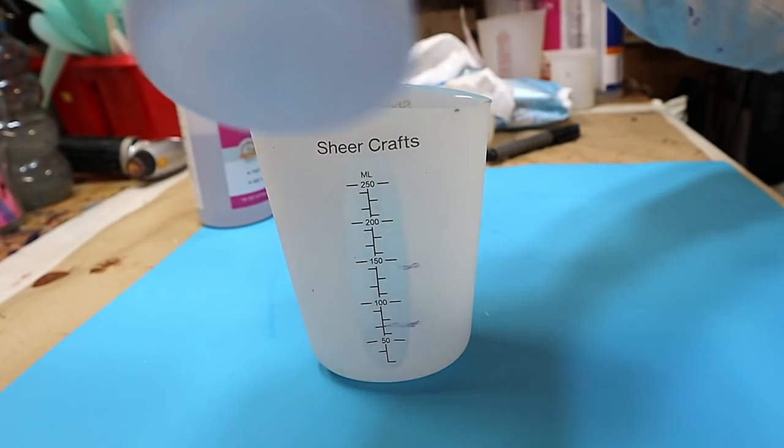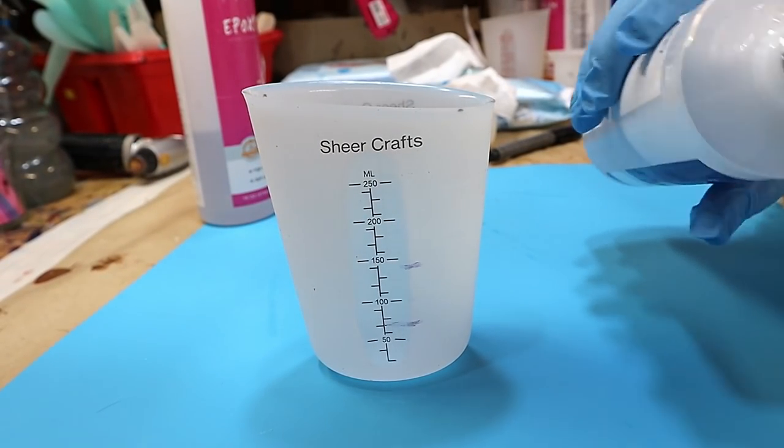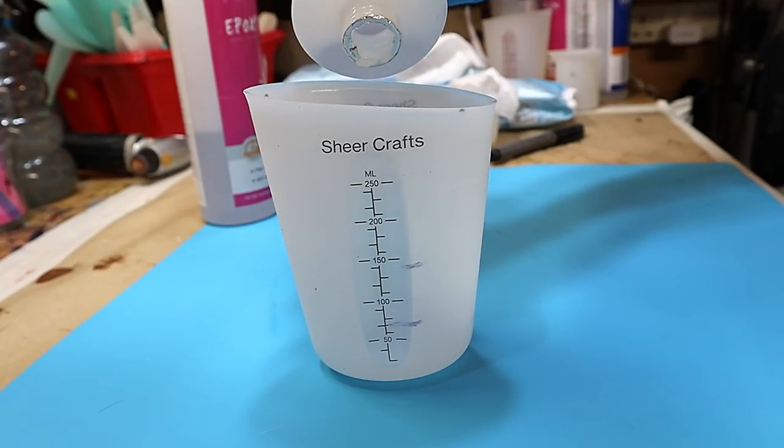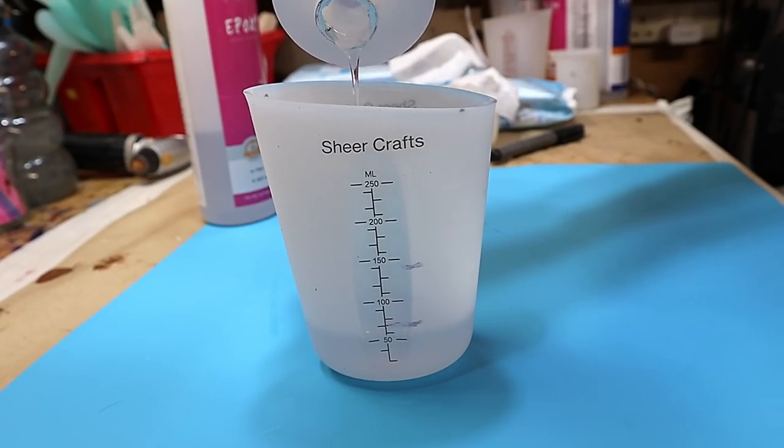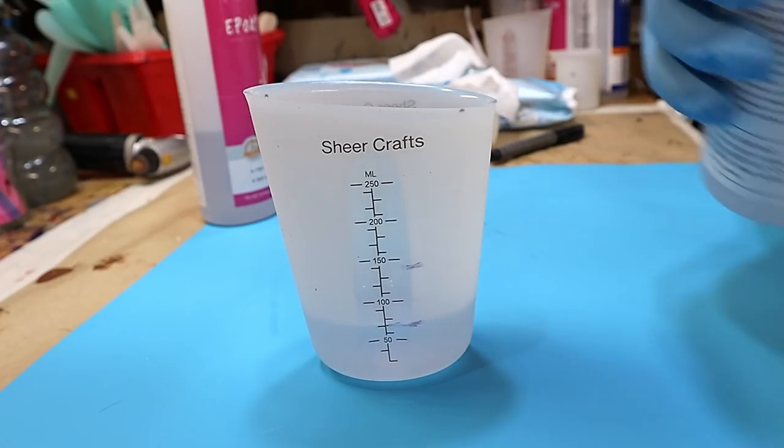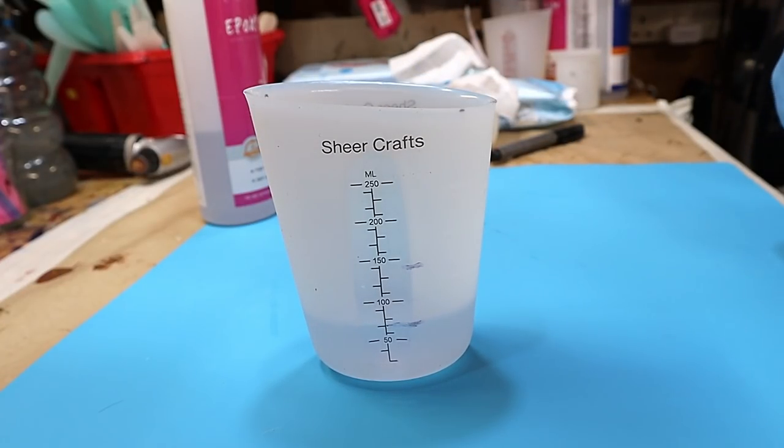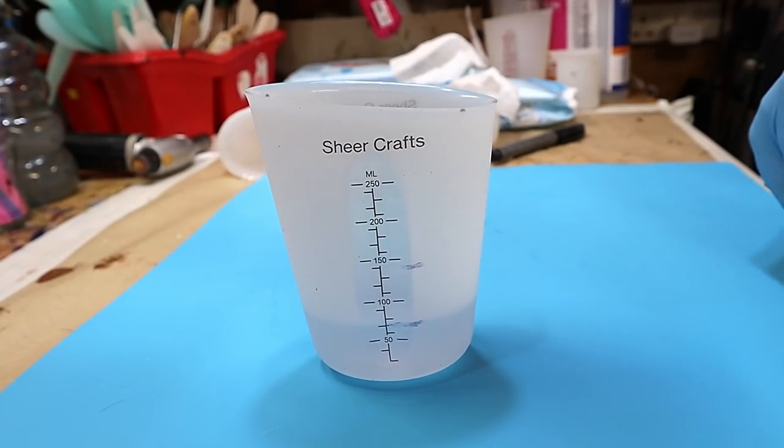I've done a close-up here of this Sheer Crafts silicone mixing jug. This project isn't sponsored by Sheer Crafts at all. They don't even know I exist, but I do find that theirs are quite accurate. I'm pouring this in slowly. I always go to the top of my little black line that I've drawn on because I find that that way I'm consistent. If I don't go to the top, then I would always go to the bottom, but I do always go to the top.